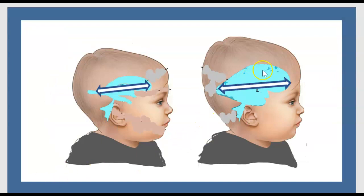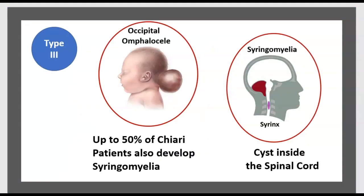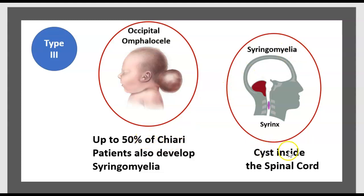Type 2 is also associated with hydrocephaly. Type 3 comes with occipital encephalocele and syringomyelia, which is a cyst inside the spinal cord. Up to 50% of Chiari patients also develop syringomyelia.